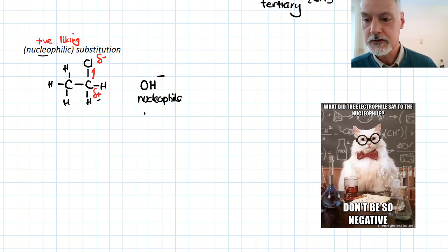Other examples of nucleophiles might include, say, the cyanide ion. Again, the negative charge is being attracted. So let's follow this through with hydroxide.